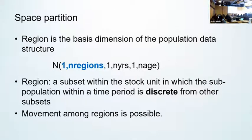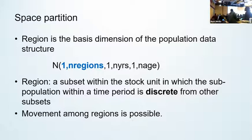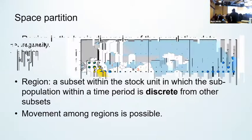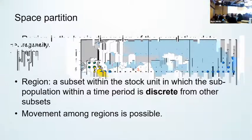The space partition is the region, and implicit within the population data structure, it is the first dimension in MultiFAN-CL — the N matrix or the 'bathtub' that was shown earlier. A region one might define as a subset within the stock unit which the subpopulation within a time period is reasonably discrete from the other subsets, and there is movement processes among the regions. Now where the action really is in this partition is in respect of the parameterization for movement.